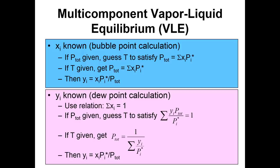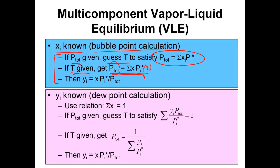For a bubble point calculation where xᵢ is known, if total pressure is given, we guess T to satisfy the bubble point equation. If T is given, it's straightforward — we plug it in since the vapor pressures are functions of temperature — and calculate total pressure. Then the mole fractions in the vapor are solved with Raoult's Law.